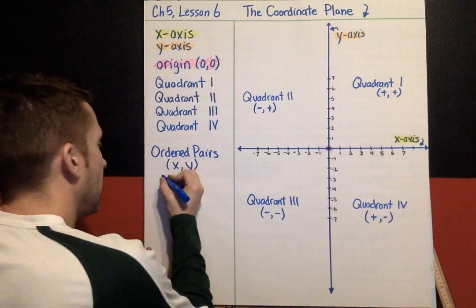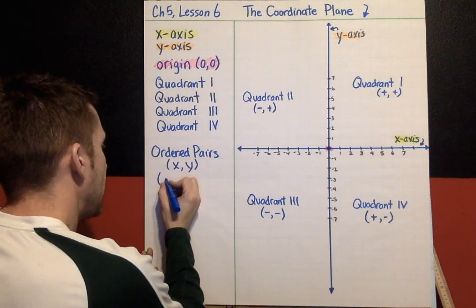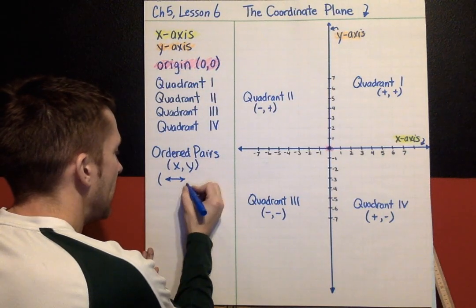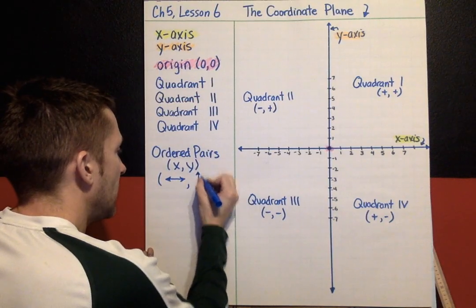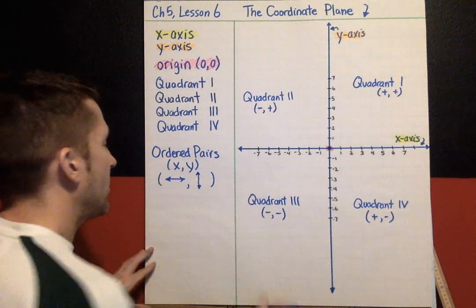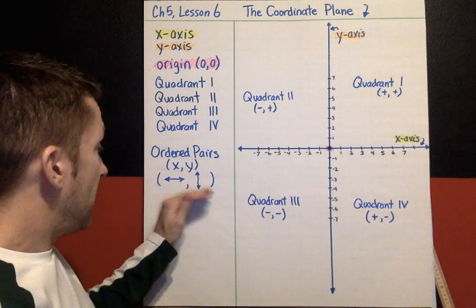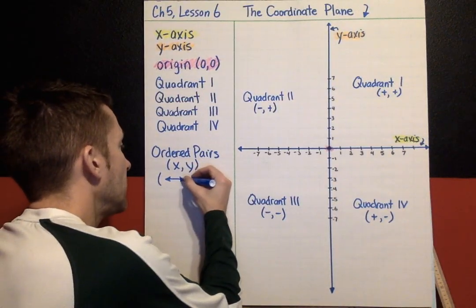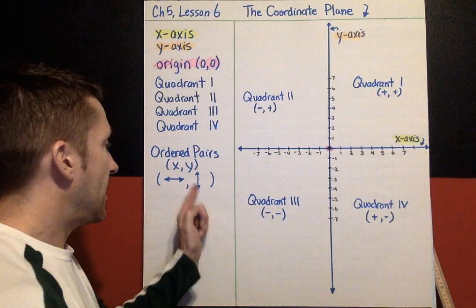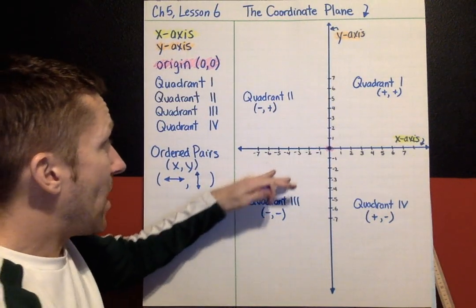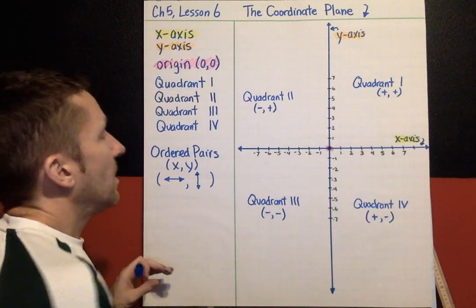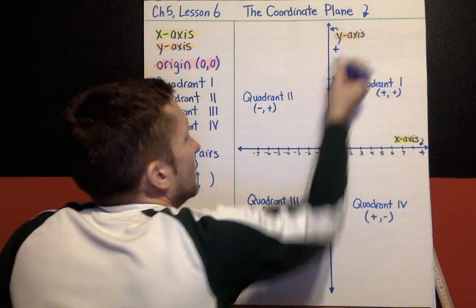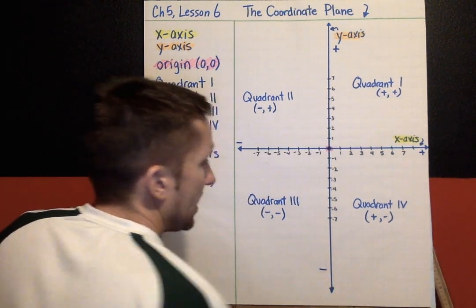The big idea for putting ordered pairs on a coordinate plane: x, comma, y means the first number is always going to tell you right or left. The second number is always going to tell you up or down. The biggest mistake is that kids mix these up — they will go up first and then over. It is always: go right or left first; if it's positive you go right, if it's negative you go left; and then up or down second. If it's a positive y-coordinate you move up, if it's negative you move down.